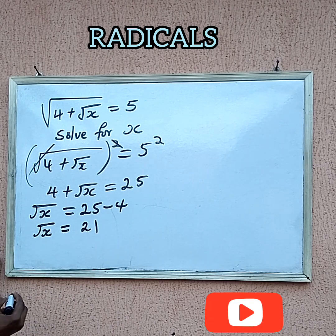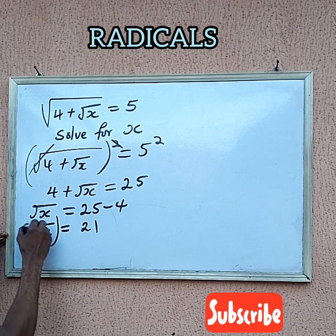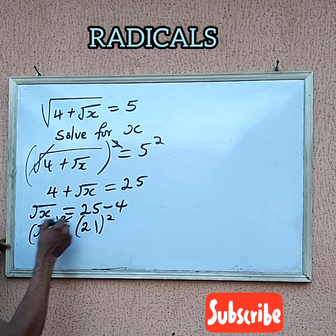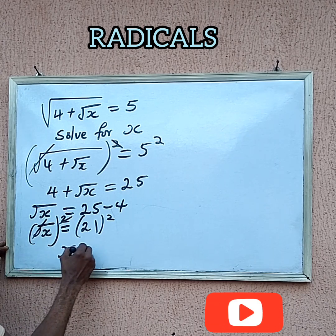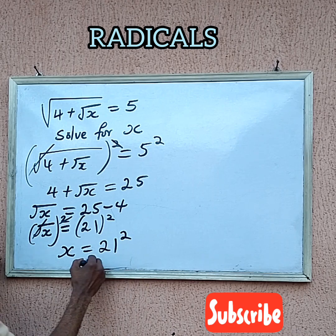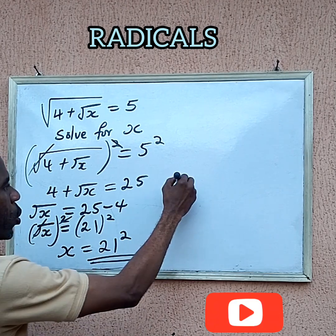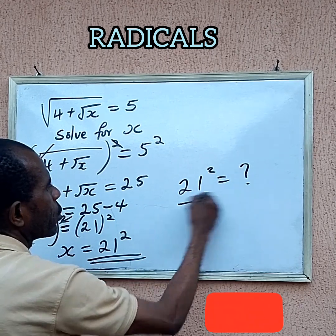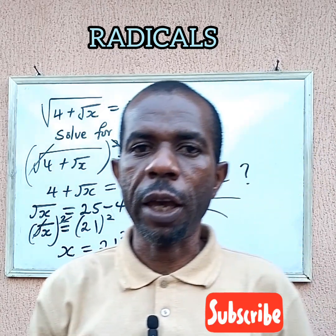Then we can square both sides again so that the square cancels the root, giving us x equal to 21 squared. So this is our answer. If you wish, write the answer — what is 21 squared? Write it in the comment section below. That is the value of x.